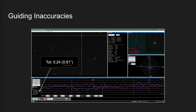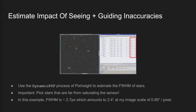It is good to have similar numbers in RA and DEC; otherwise you might end up with elongated stars. To measure the combined impact of atmospheric seeing and guiding inaccuracies, you can open one of your images in PixInsight and measure the FWHM — full width at half maximum — of stars using the dynamic PSF process. Make sure to pick stars that are far from being saturated but not too dim. In this example, I measured an average FWHM of 2.7 pixels, which amounts to about 2.4 arc seconds at my image scale of 0.89 arc seconds per pixel.